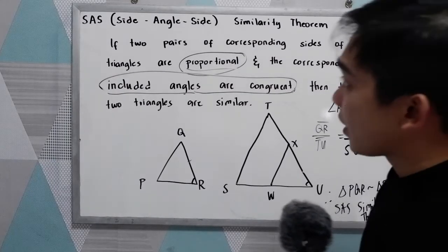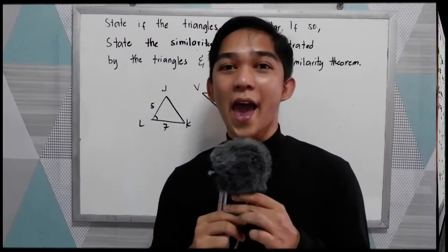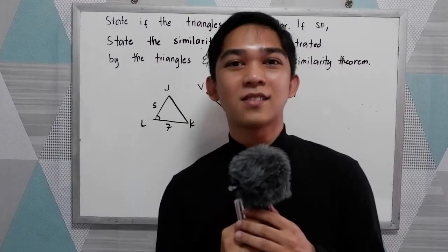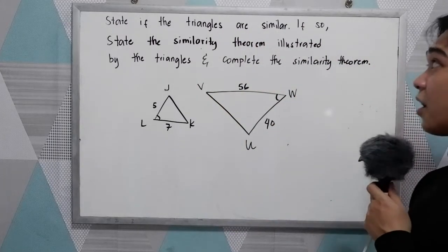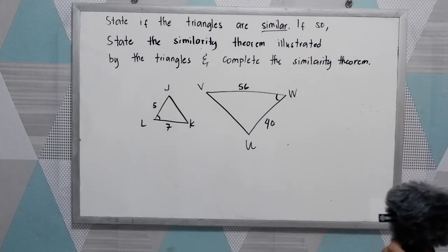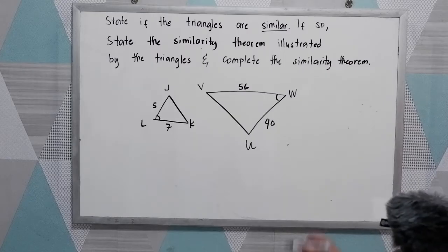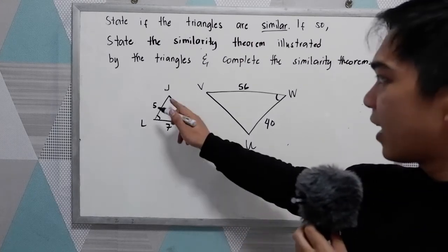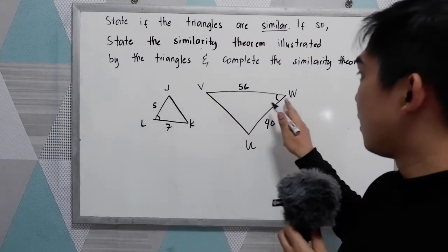Now to better understand, let's have an example about the SAS Similarity Theorem. State if the triangles are similar. If so, state the similarity theorem illustrated by the triangles and complete the similarity statement. We have here Triangle JLK and Triangle VWU.